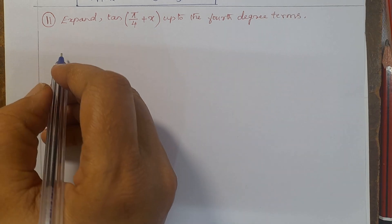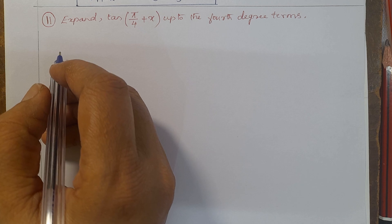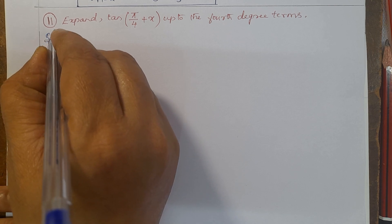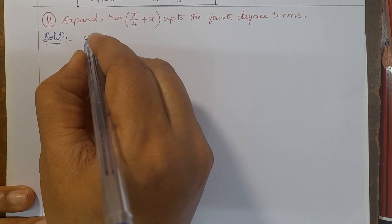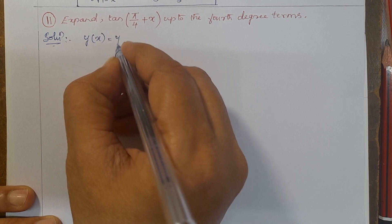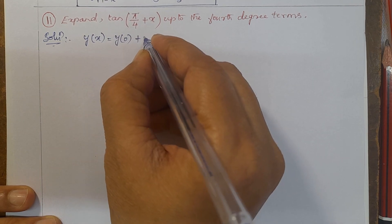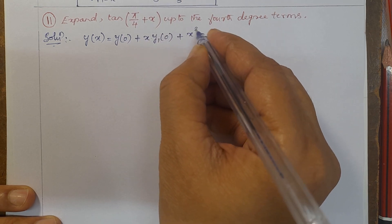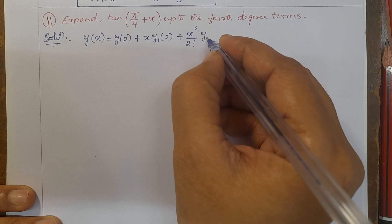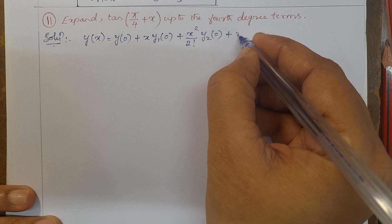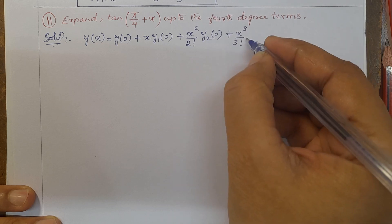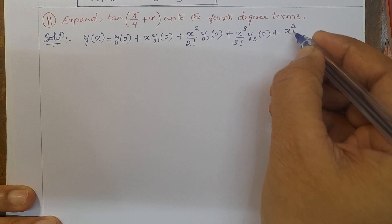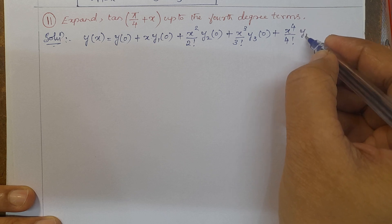Here I am going to use the Maclaurin series expansion of y(x). That is: y(x) = y(0) + x·y1(0) + x²/2! · y2(0) + x³/3! · y3(0) + x⁴/4! · y4(0). We stop at the 4th degree terms.